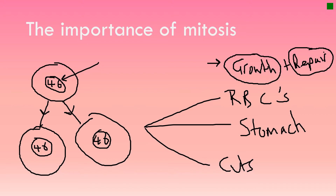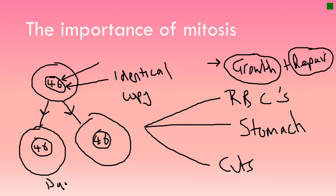To cut a long story short, the importance of mitosis is for growth and repair. It's important for replicating the DNA or the chromosomes in a eukaryotic cell — making an identical copy of the DNA or the chromosomes. We start from one parent cell and end up with two daughter cells. This allows us, for example, to replenish the red blood cells, the stomach lining, or breaks in the epidermis of the skin. That's a full answer to the first part of the question.